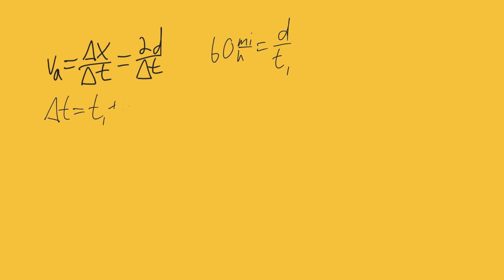Now it's going to be helpful for us to rearrange our 60 miles per hour equals d over t1 in terms of time. So we are going to write it out as d equals 60 t1. And we are going to plug this back into our velocity average equation. So velocity average is equal to 2 times 60 t1, which is 120 times 1 over time 1 plus time 2.